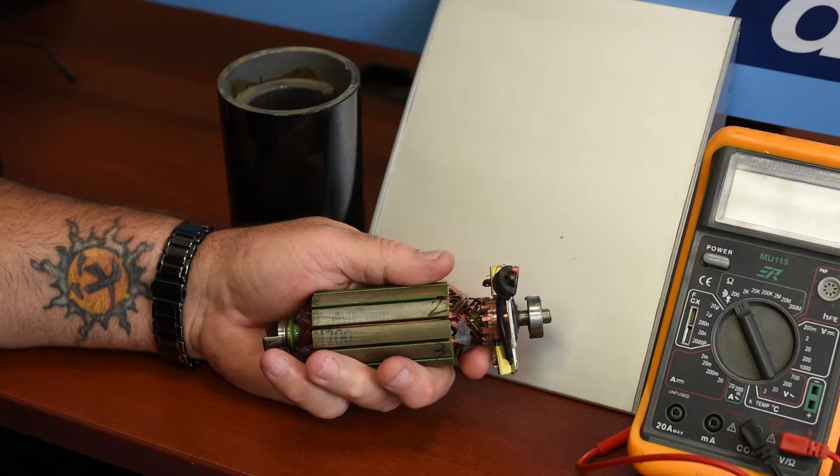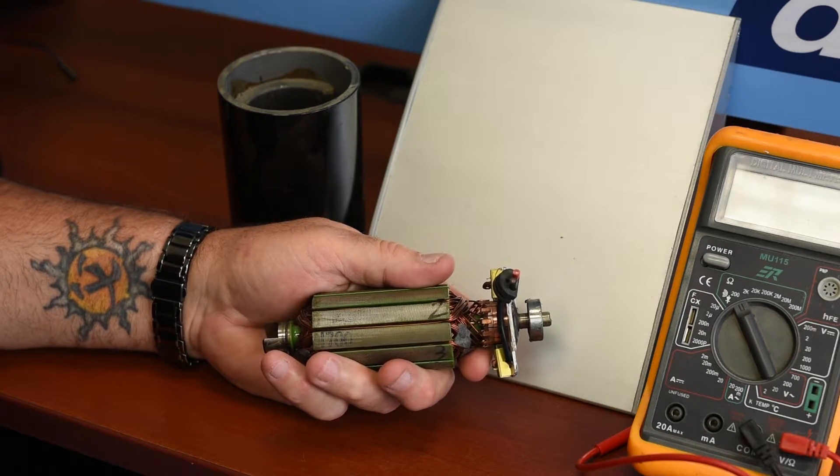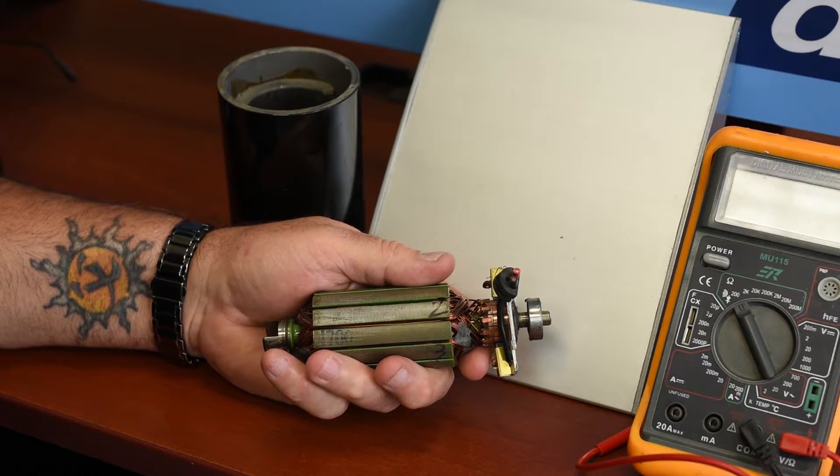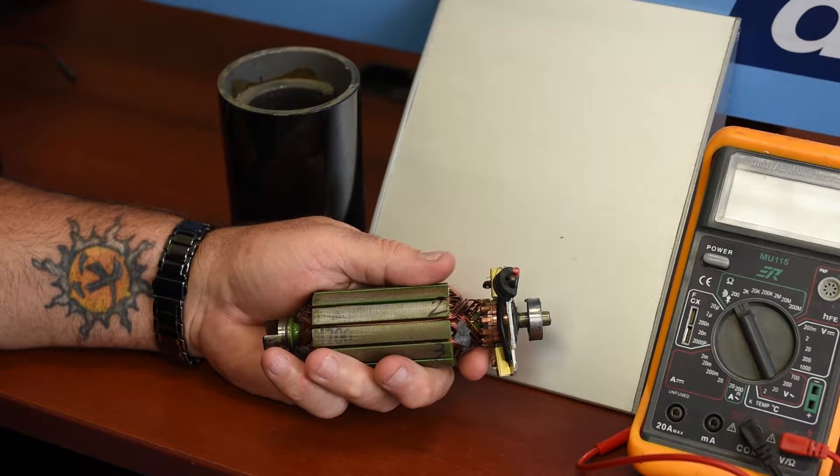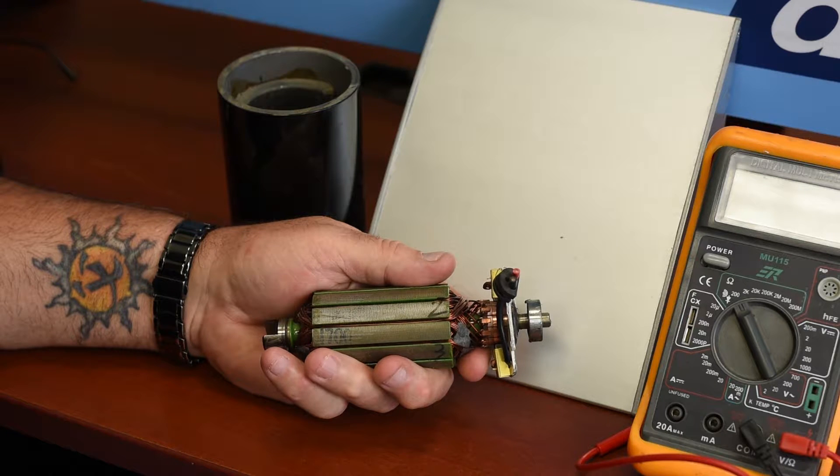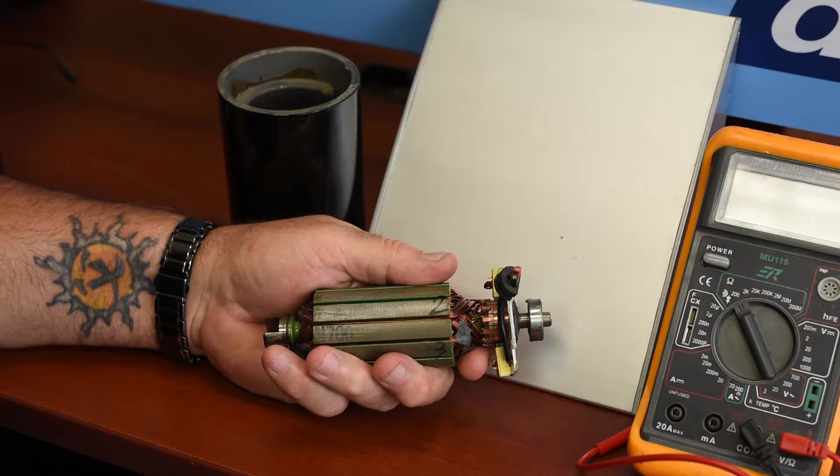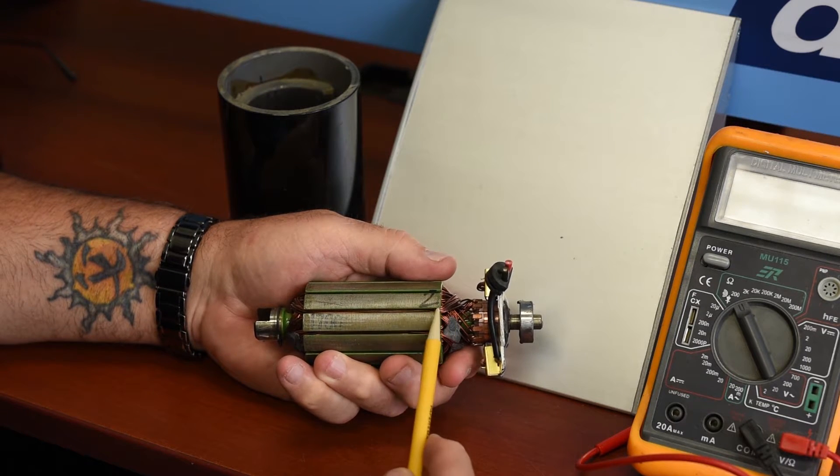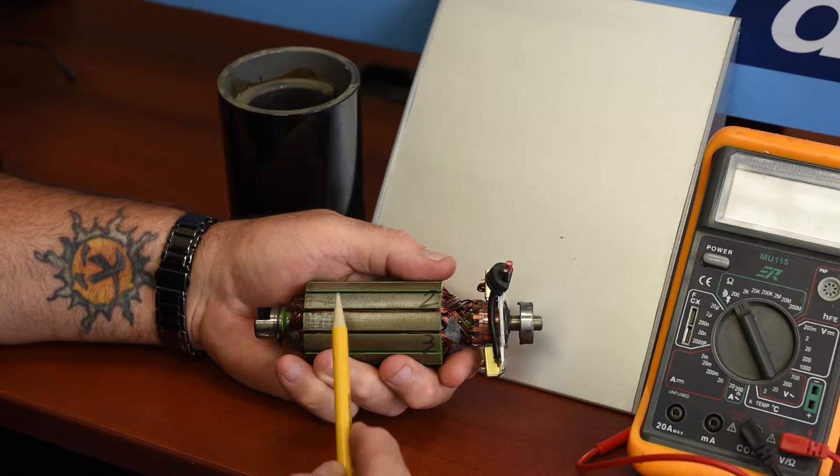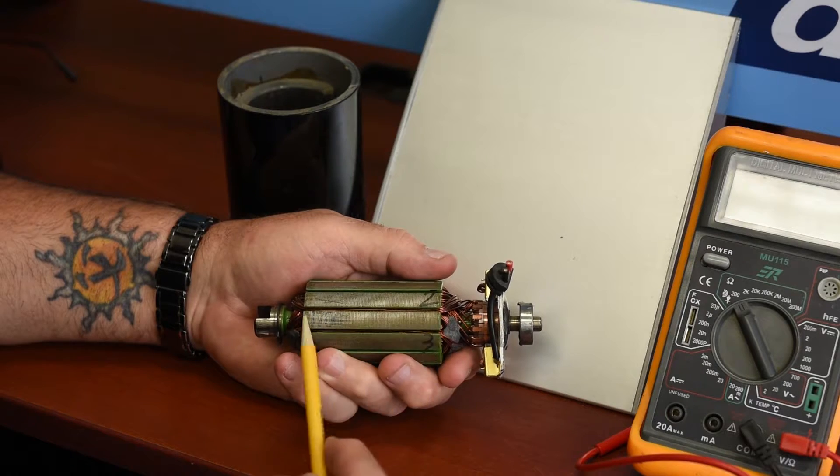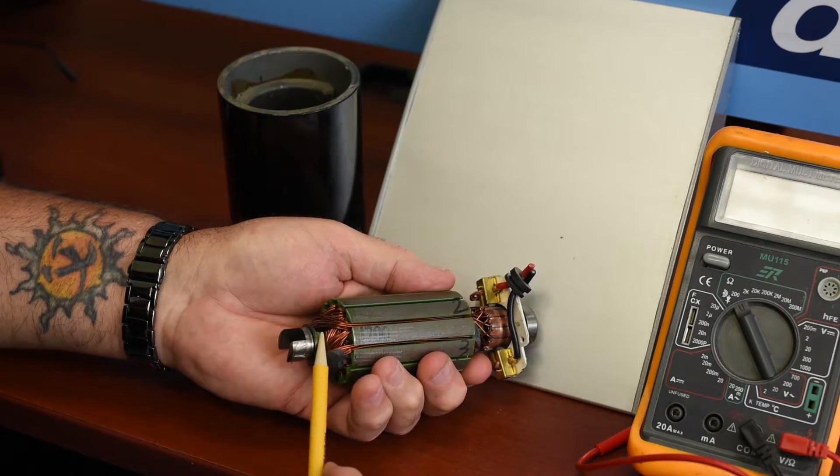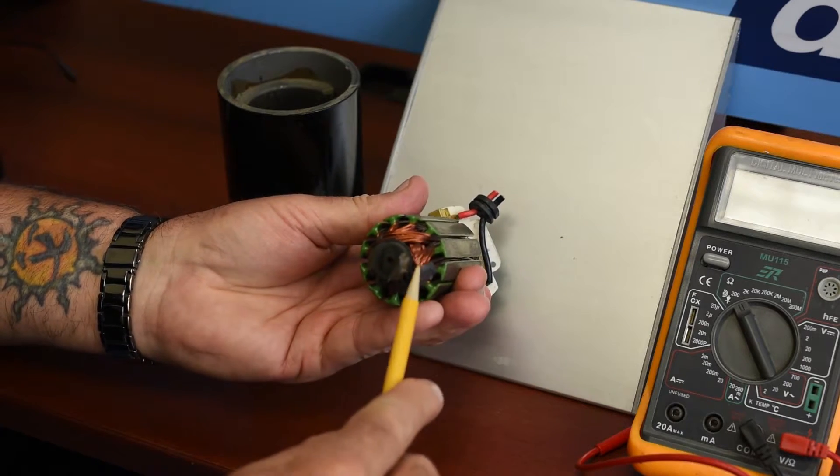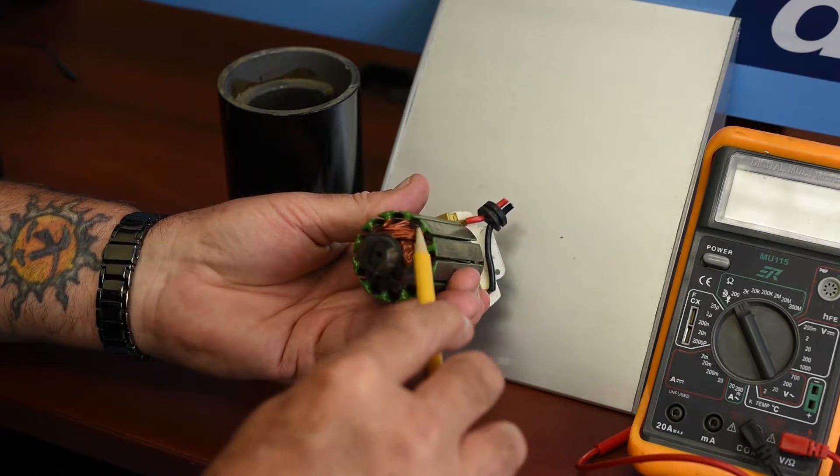Before I demonstrate how to measure a motor, I want to first familiarize you with what makes up a motor and the basic principle on how a motor works. This is called the armature, and what the armature is, is a series of metal cores that are wound with copper wires. As you can see by the end, you can see the windings that wrap around the cores.